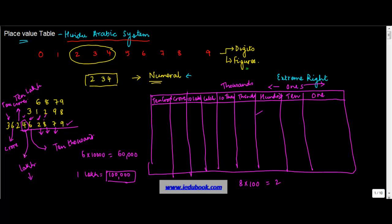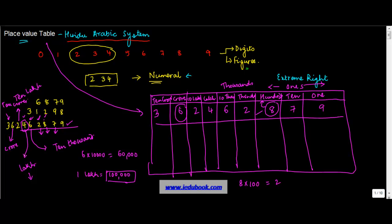A place value table represents the value of a particular digit at its position. So if I write the number 9, 7, 8, 2, 6, 4, 2, 6, 3 — I can find out what each digit represents. The digit 6 in the crore place represents 6 crores. The digit 8 represents 8 hundreds. The digit 6 in the ten-thousands place: 6 into 10,000 equals 60,000.